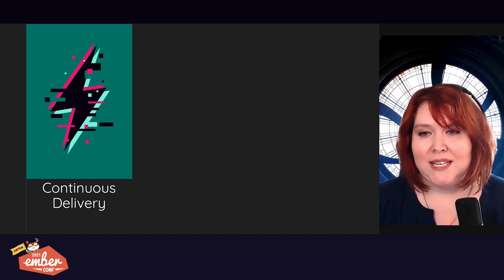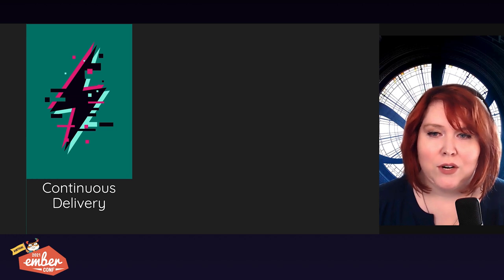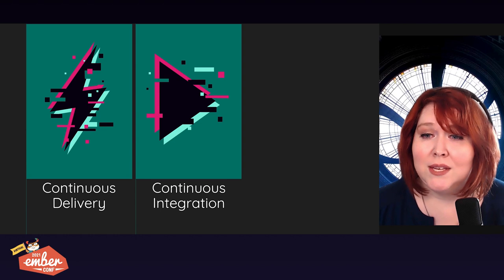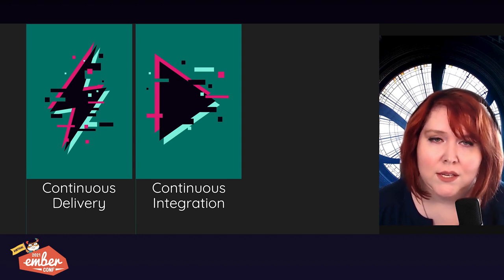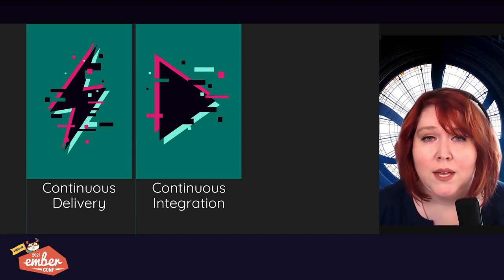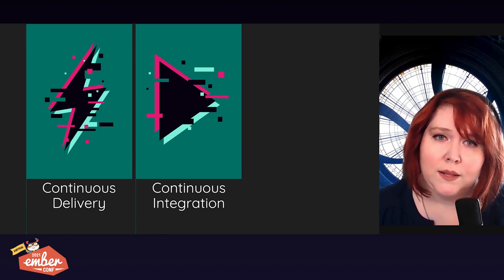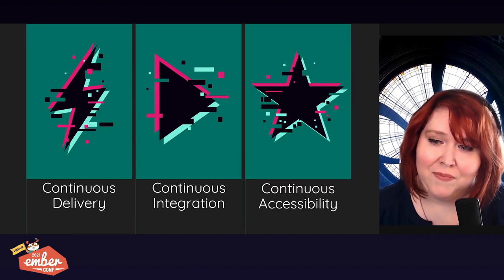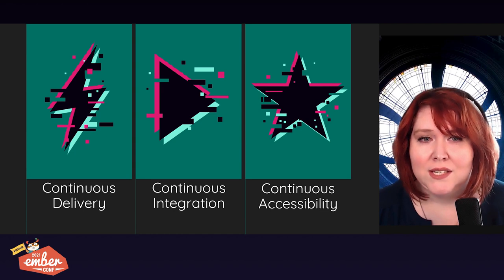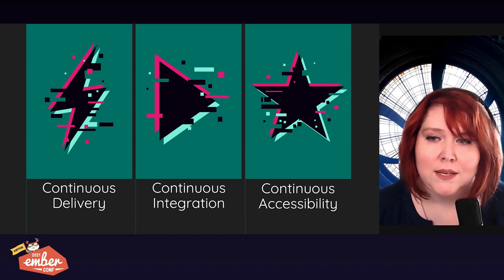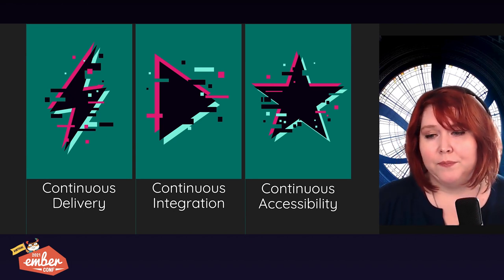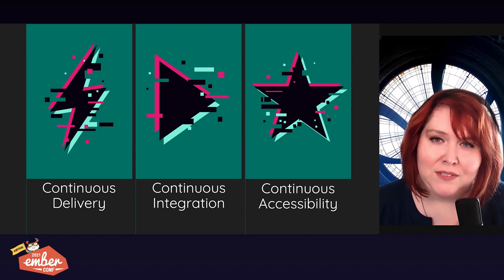In software engineering today, we have continuous delivery, and we also have continuous integration, and these two things have drastically improved our lives — unless, of course, you're the engineer working on bugs for these things, in which case you probably swear a lot, and I'm sorry, but we really appreciate your sacrifice. But now I want us to turn our thoughts to this new idea: continuous accessibility. How will we get there? How will we deliberately achieve this vision? As I like to say, we have to be on purpose.